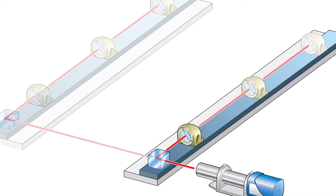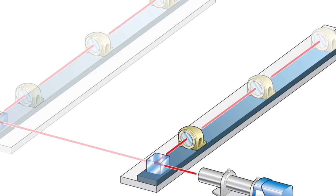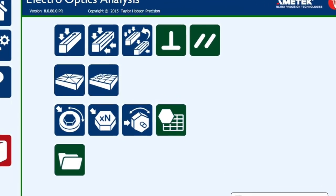To make a squareness measurement or parallelism measurement, you use one of the green icons.